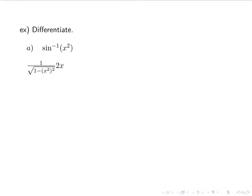Then I'm going to clean this up a little bit. I'm going to have 2x on top, divided by the square root of 1 minus x to the 4th. Remember, when I'm squaring something that already has a power, I multiply those two powers. So I'm using the fact that 2 times 2 is 4 — not 2 plus 2, but 2 times 2 is 4.